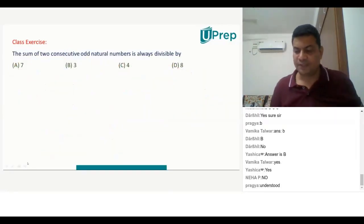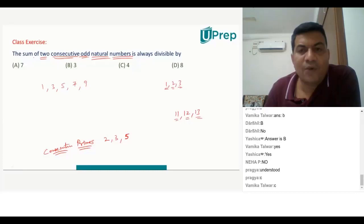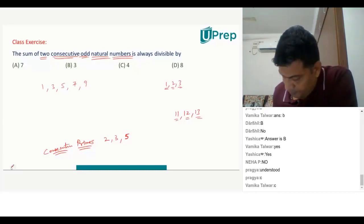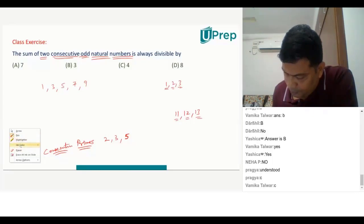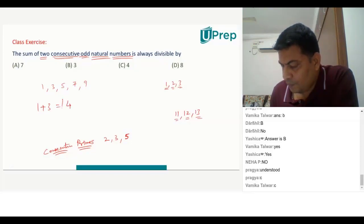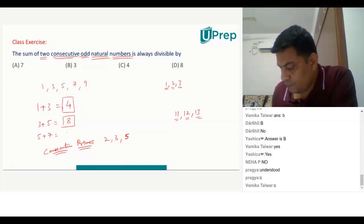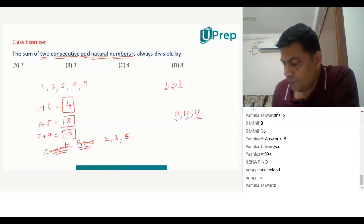Let's go ahead and solve this. So the answer is 4. Neha, can you explain? Go ahead. I can explain it with examples. First, we take the smallest odd numbers as 1 and 3. So 1 plus 3 is 4. Then the next pair: 3 and 5, and 3 plus 5 is 8, which is in the table of 4. And 5 and 7: 5 plus 7 is 12, which is also in the table of 4. So I came to the answer.